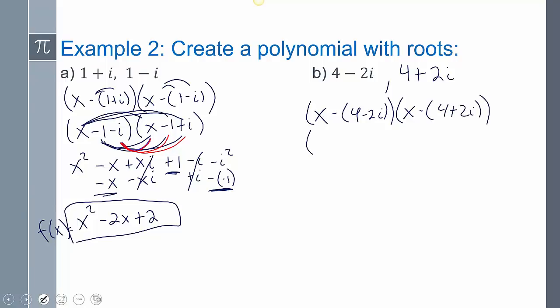I distribute the negative, so I get x - 4 + 2i, and then x - 4 - 2i. Same idea. You go through and you multiply those together to be able to create your polynomial. Remember the hint, your i should be canceling out.